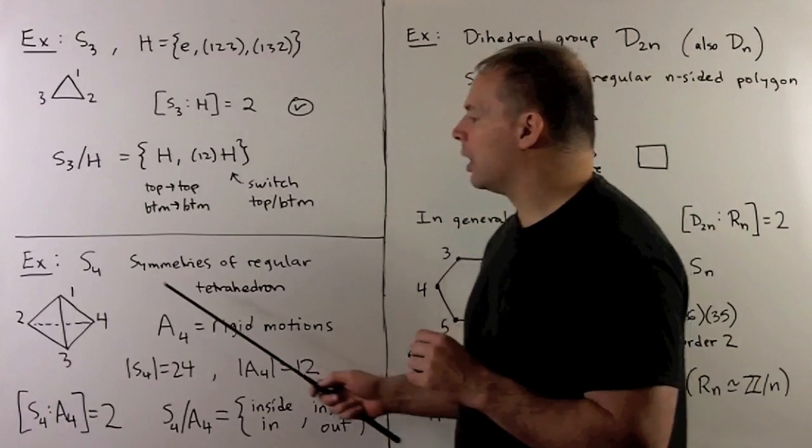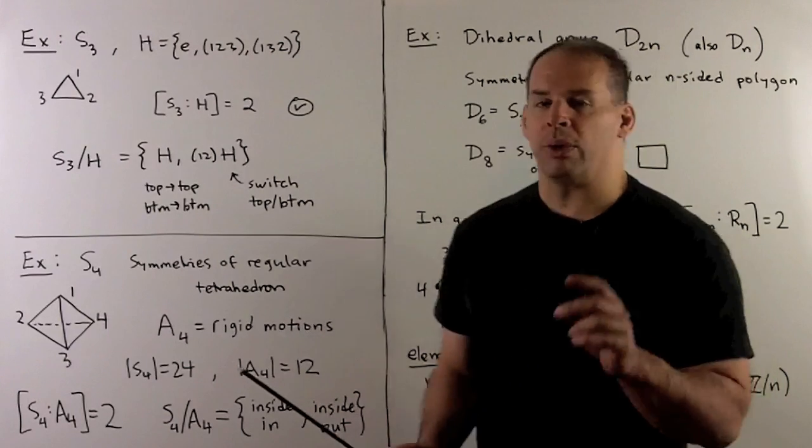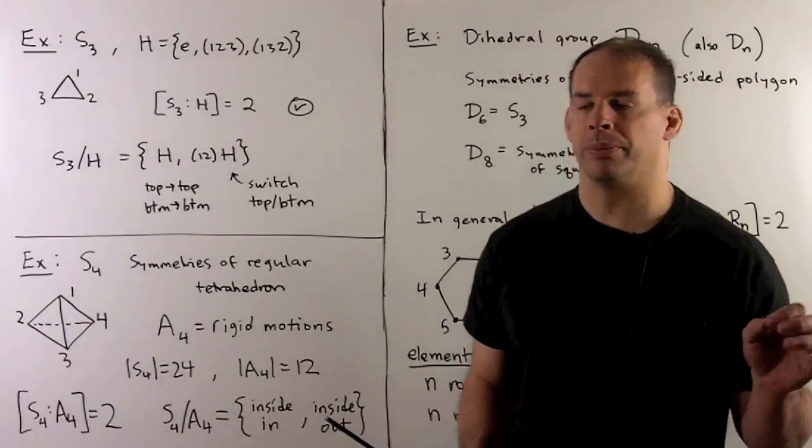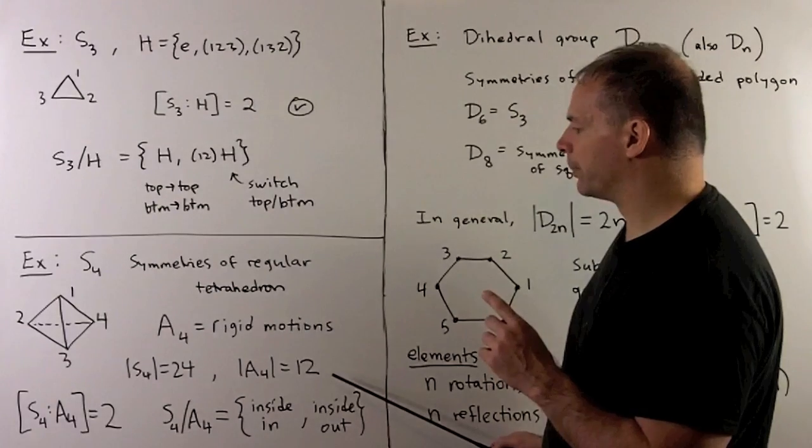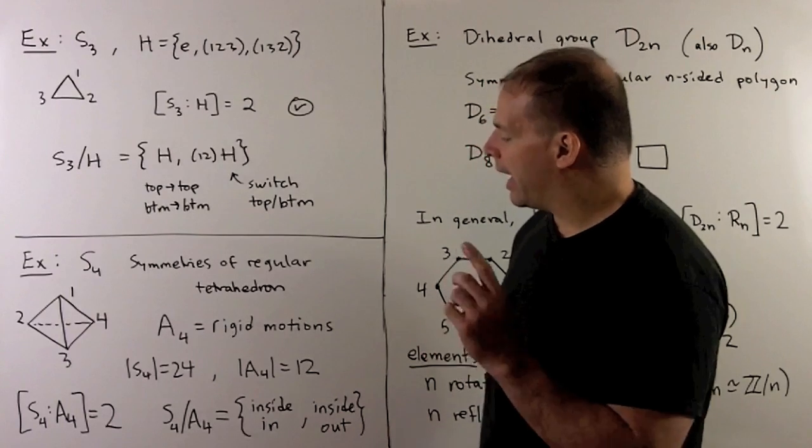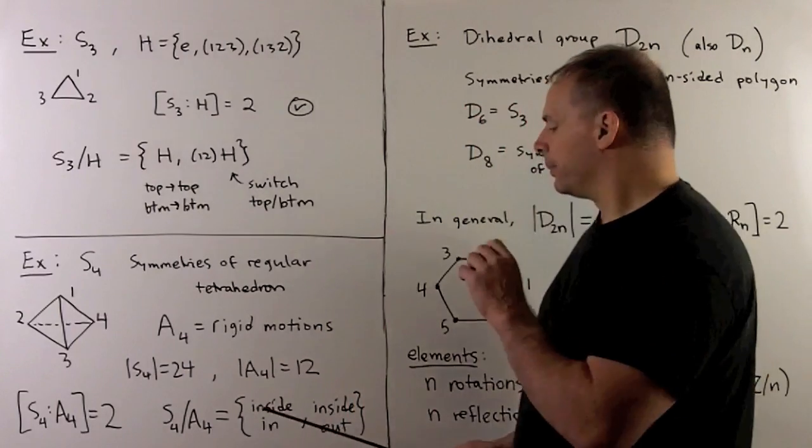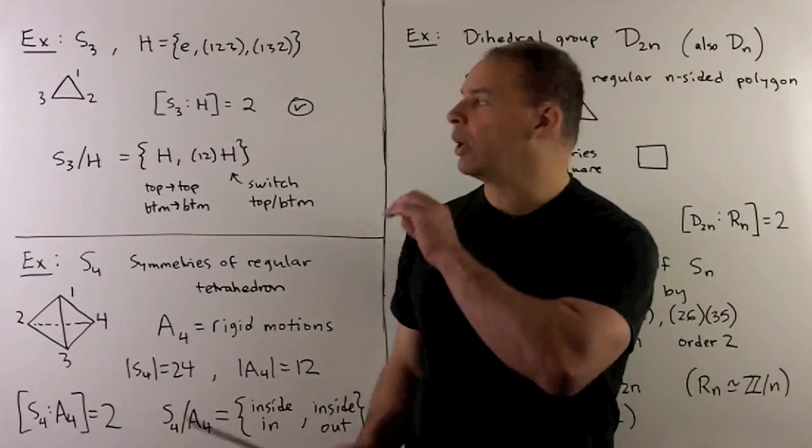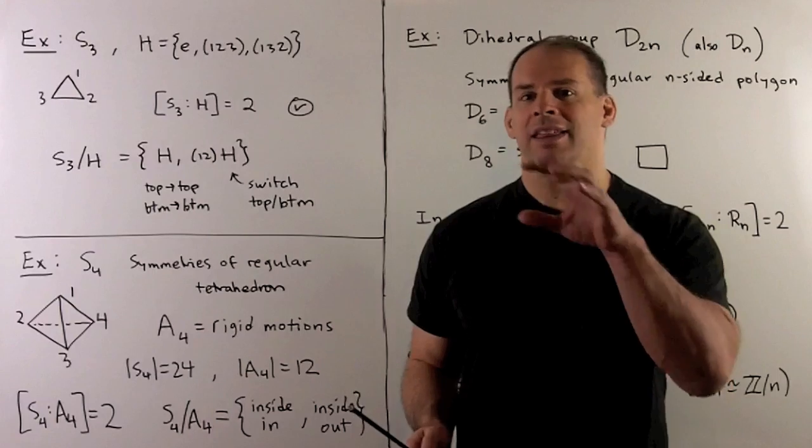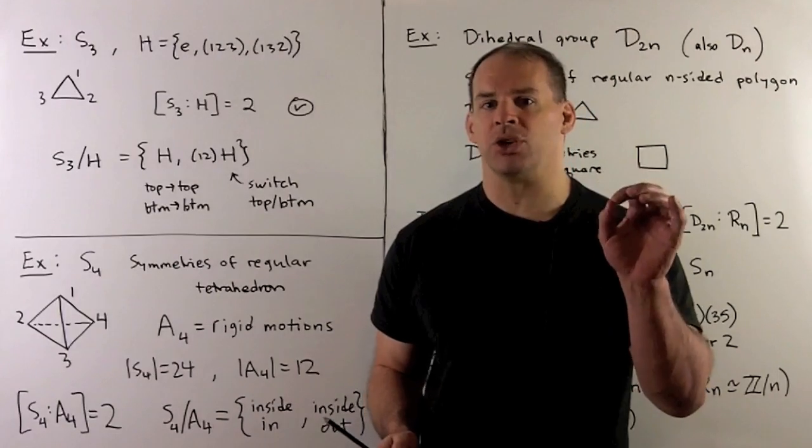Another example: I'll consider S4, the symmetries of a regular tetrahedron. This has 24 elements. We have the subgroup A4, which consists of the rigid motions, so here we have no reflections in the group. A4 has 12 elements, so the index of A4 in S4 is 2, which means A4 is a normal subgroup. For the quotient group, the way the cosets collect the elements: the identity coset elements carry the inside to the inside, the outside of the tetrahedron to the outside. For the other coset, those elements turn the tetrahedron inside out.